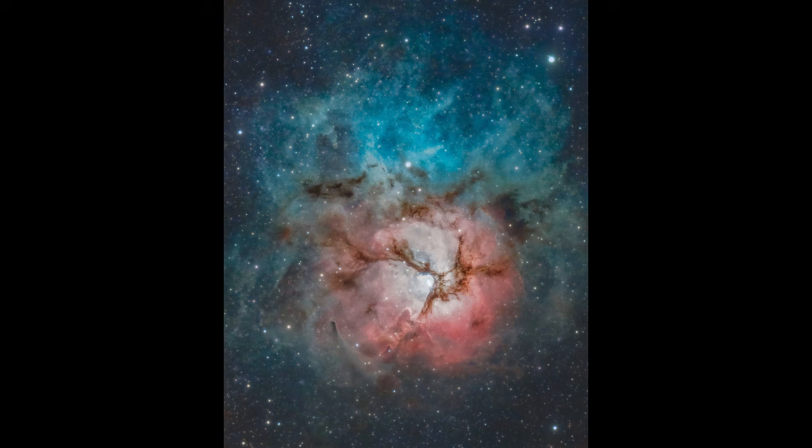The blue light from the sun gets scattered around and comes from all directions, giving us a blue sky. The red light comes straight through, giving us a very red sunset when we're going through the most of the atmosphere.